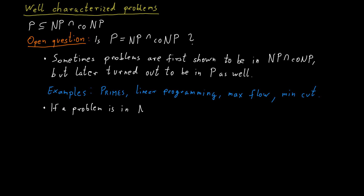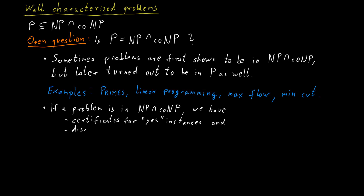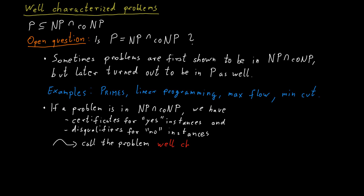If a problem is contained in the intersection of NP and co-NP, it means that we have succinct certificates for yes instances, but also succinct disqualifiers for the no instances of the problem. And both of these can be checked efficiently. In this case, we call a problem well-characterized.